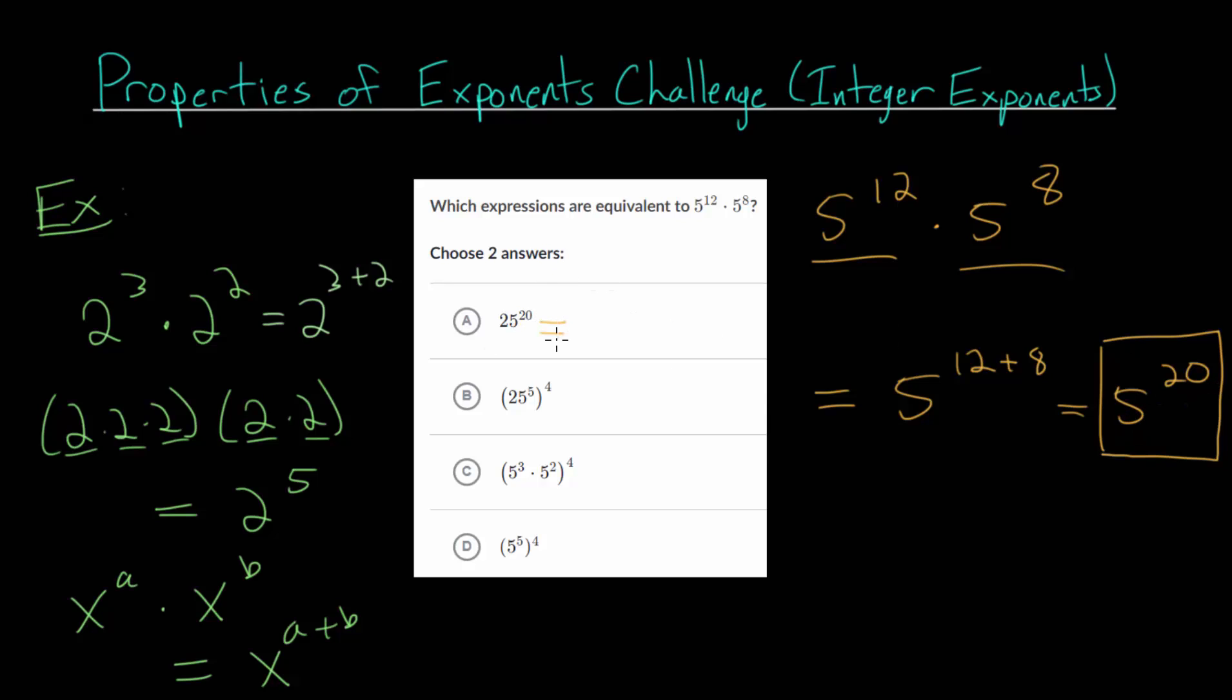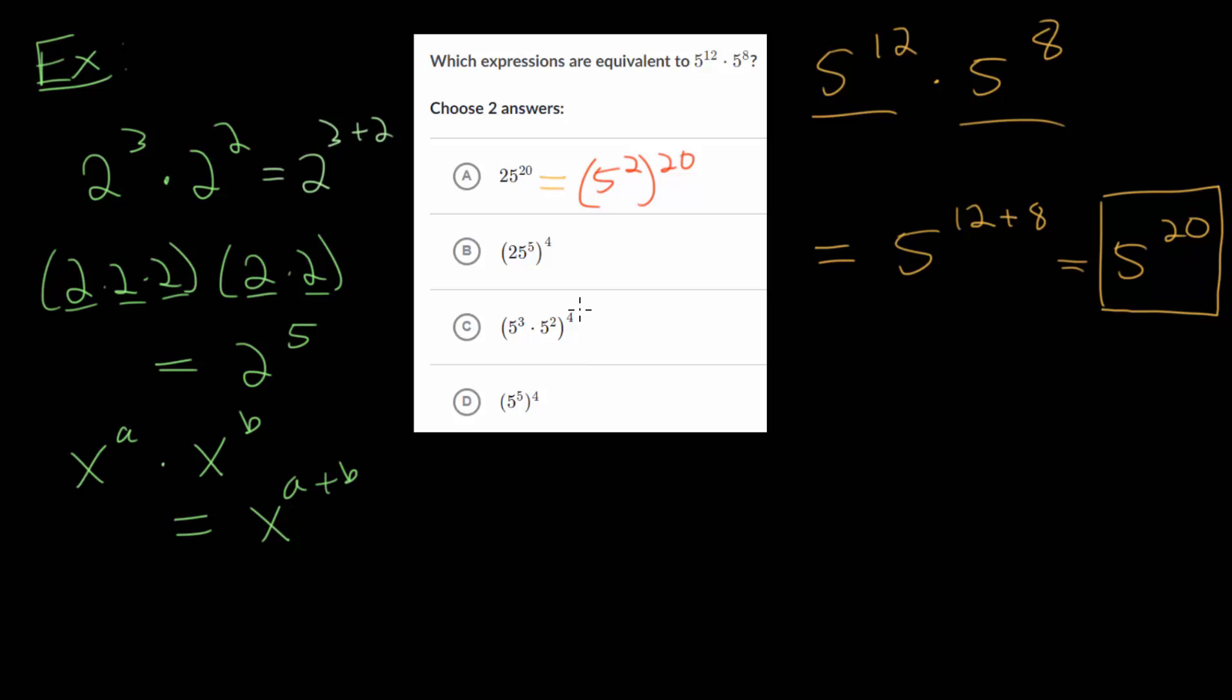In fact, one way you can rewrite this is 5 squared to the 20th power. We also know that when you raise an exponent to an exponent, you multiply. We'll need that property as well. So let me go through that since we'll need it for a later one. Let's again use smaller numbers.